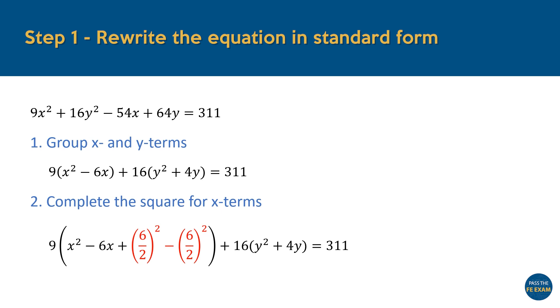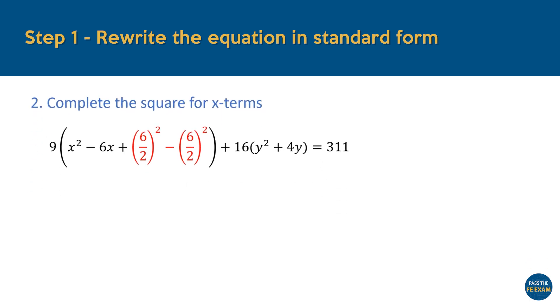we can proceed by completing the square for the X terms. This involves taking the coefficient of the X term, dividing it by 2, and squaring the result. To maintain equivalence in this equation, this squared value is both added and subtracted within our brackets. This step ensures the expression can be factored into a perfect square trinomial, bringing us closer to the standard form. At this stage, we can simplify our squared terms to find that they both equal 9.